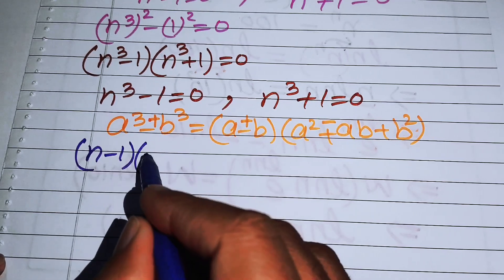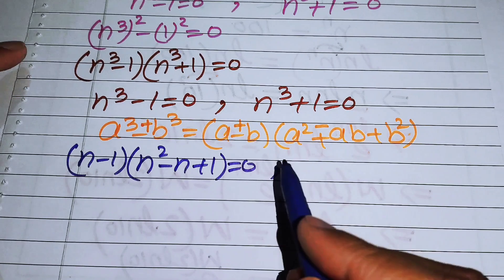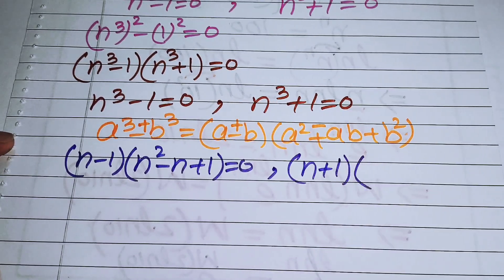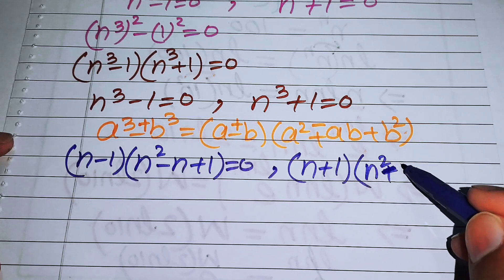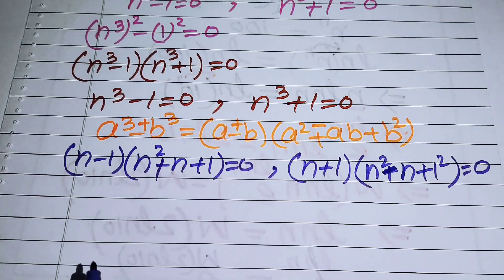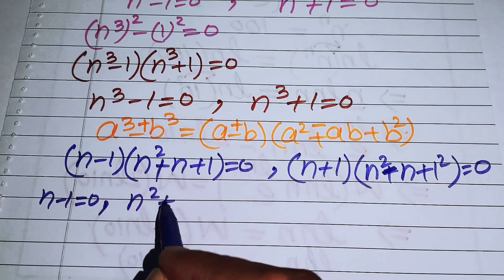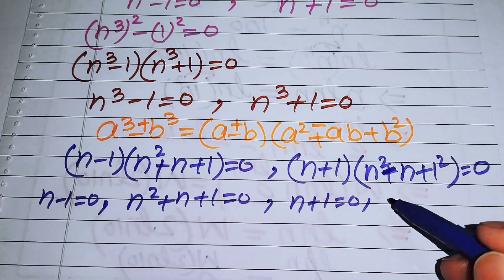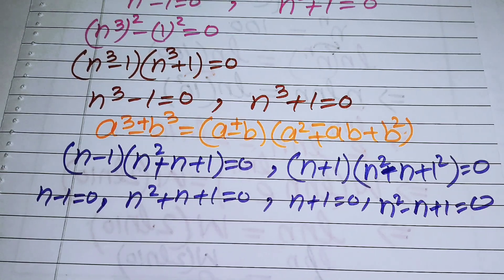Applying the cubic formula to the first term gives n minus 1 times n squared plus n plus 1 equals 0. Applying it to the second term gives n plus 1 times n squared minus n plus 1 equals 0. From these we get four sub-equations: n minus 1 equals 0, n squared plus n plus 1 equals 0, n plus 1 equals 0, and n squared minus n plus 1 equals 0.